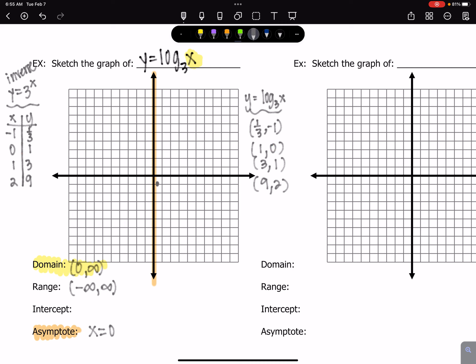So 1 third, negative 1 would be right about there. 1, 0. That's an intercept. 1, 0. And 3, 1. And then 9, 2. And there's our parent function, y equals log base 3 of x. And then from there, we're going to be able to sketch different graphs.